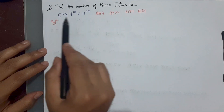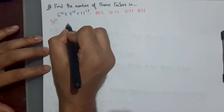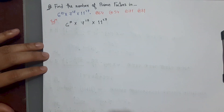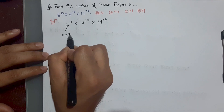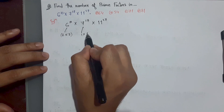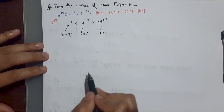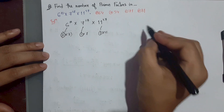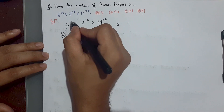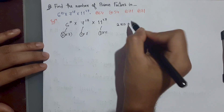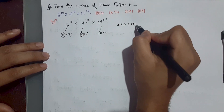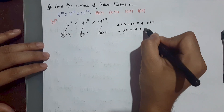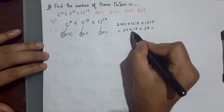We need to find the number of prime factors. Given: 6 to the power 10 × 7 to the power 11 × 11 to the power 27. We write 6 as 2 × 3, 7 as 1 × 7, and 11 as 1 × 11. Now we consider all the powers: for 2 it's 10, for 3 it's 10, for 7 it's 11, and for 11 it's 27. We add them: 10 + 10 + 17 + 27 = 64.